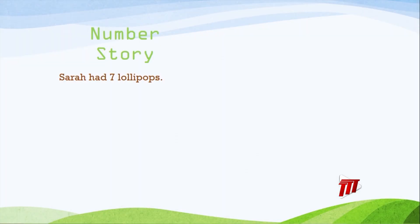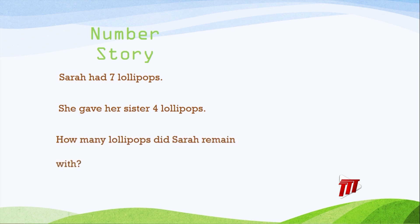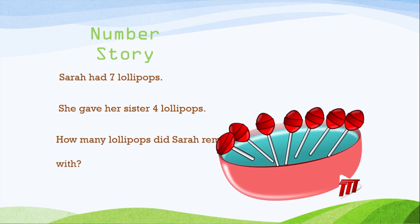You're doing an excellent job! Let's do another one. Sarah had seven lollipops. She gave her sister four lollipops. How many lollipops did Sarah remain with? Those are lovely red lollipops, and I'm going to use my red counters to match — I'm going to put out seven red counters.